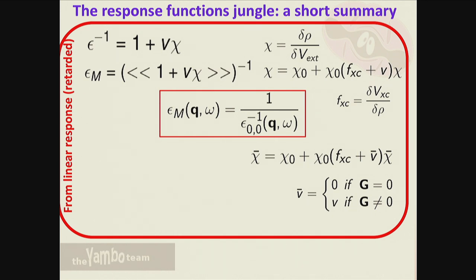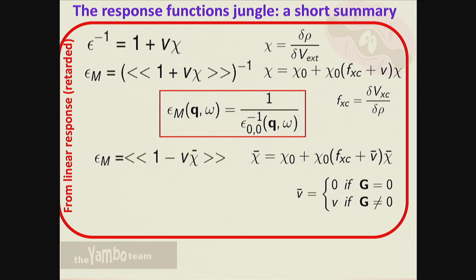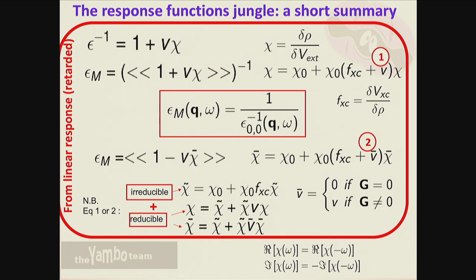There is another way to include local field effects and go from microscopic to macroscopic that hasn't been mentioned yet. You can obtain an equation for a quantity called chi-bar, where the only difference is that the long-range part of the Coulomb potential is cut. Mathematically, it can be shown that if you do it this way, the macroscopic dielectric function is directly related to the macroscopic average of chi-bar, so you obtain the macroscopic dielectric function directly.